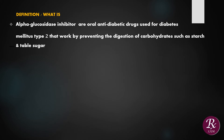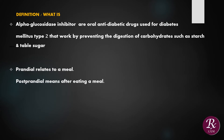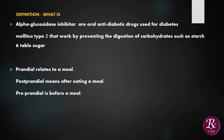Alpha-glucosidase inhibitors are oral antidiabetic drugs used for diabetes mellitus type 2 that work by preventing the digestion of carbohydrates such as starch and table sugar. Prandial means related to a meal. Postprandial means after eating a meal. Preprandial is before a meal.